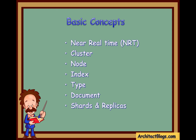Finally, the document. A document is a basic unit of information that can be indexed. For example, we can have a document for a single customer, another document for a single product, and yet another for a single order. Usually a document is expressed in JSON — JavaScript Object Notation — which is chosen because it is lightweight.